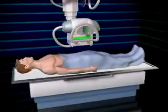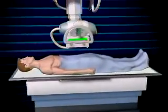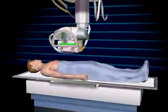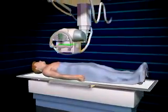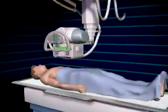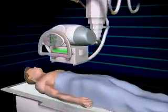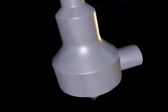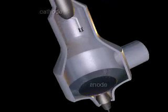X-ray technology utilizes high-energy rays that can pass through certain body tissue and create imagery vital to diagnosis and treatment. The X-ray machine is composed of an X-ray tube that contains a pair of electrodes, or conductors, called a cathode and an anode.